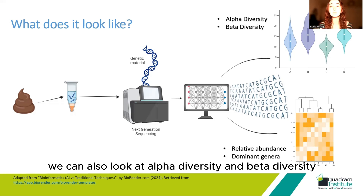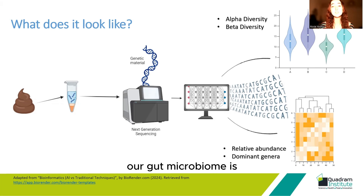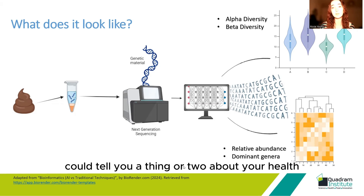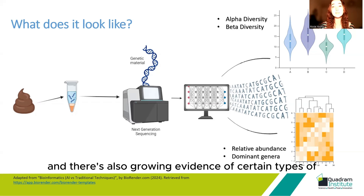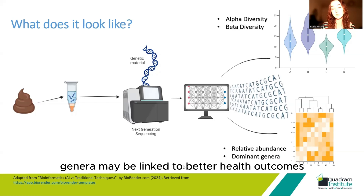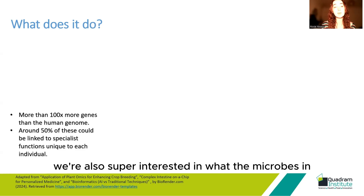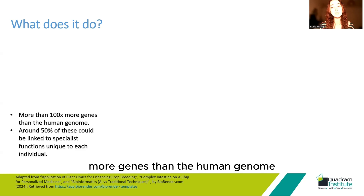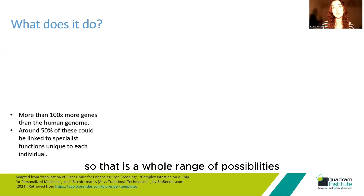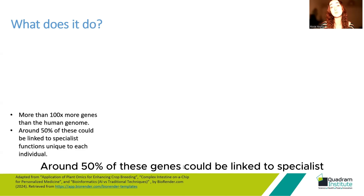We can also look at alpha diversity and beta diversity — metrics which look at how diverse our gut microbiome is. More diverse guts tend to be associated with better health states, and there's also growing evidence that certain types of genera may be linked to better health outcomes. We're also very interested in what the microbes in our gut are actually doing, because they have 100 times more genes than the human genome — a whole range of possibilities. Around 50% of these genes could be linked to specialist functions which are unique to each individual, so there is a whole lot of complexity to unwrap.